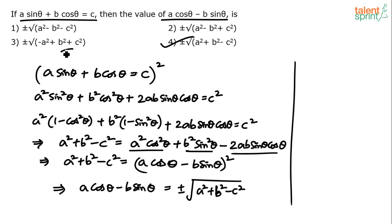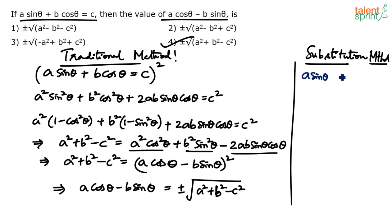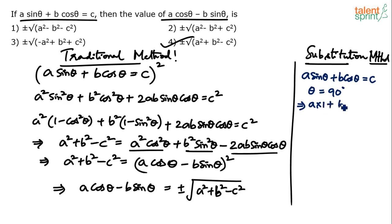Now assuming you don't get that idea, this is the traditional method. Can we do something else? Yes — substitution, the smart method. We know a·sinθ + b·cosθ = c. No condition is given on θ, so we can take any value. Let's take θ = 90°.